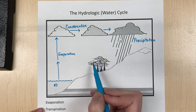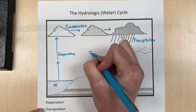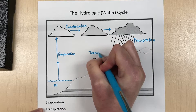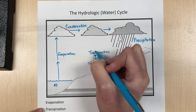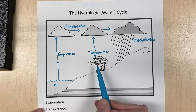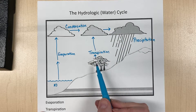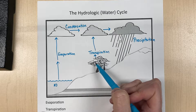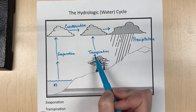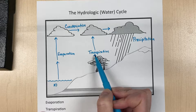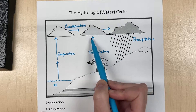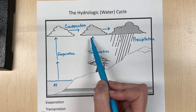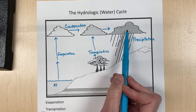Another way we can get clouds is through transpiration from plants. Plants release water vapor from their leaves. On really hot days, they're releasing a lot of water vapor. Water vapor, which is gaseous water — water in gas form — goes up in the atmosphere, and the higher it gets, the cooler the air is. That air can't hold as much moisture, so it condenses into clouds and you get rain.